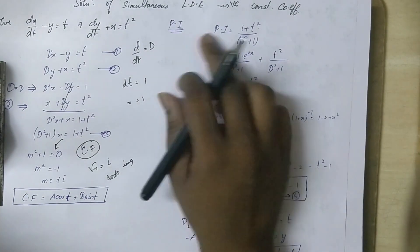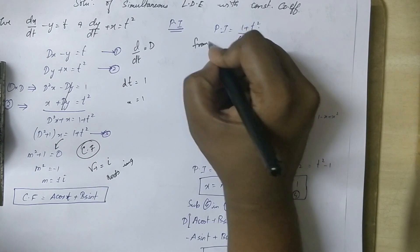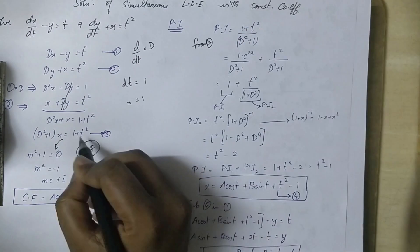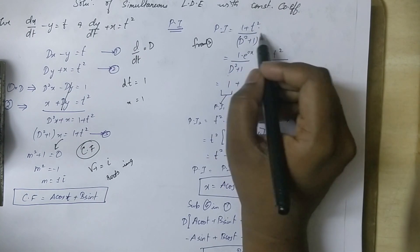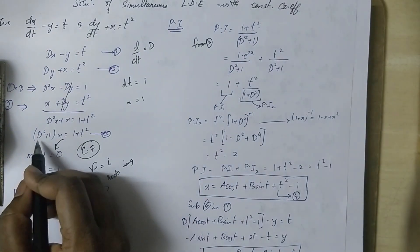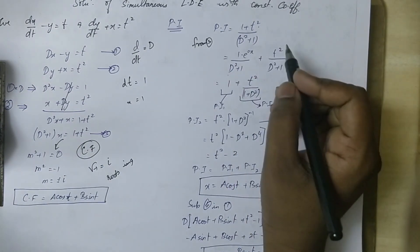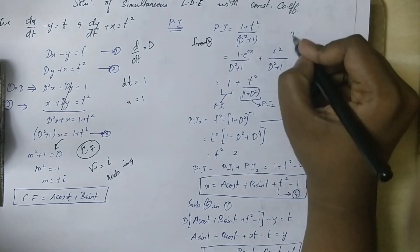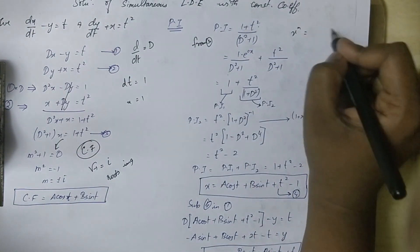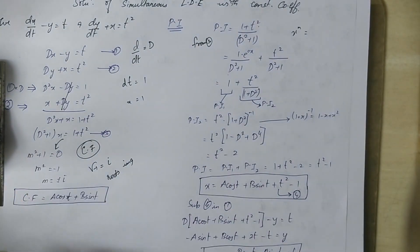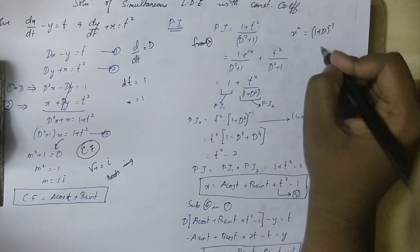The CF is a·cos(t) plus b·sin(t). For the particular integral, from equation 3 we have PI equal to 1 divided by (D squared plus 1) acting on (1 plus t squared). Since this is of the form x power n, we use the binomial expansion: 1 plus D squared the whole power minus 1.